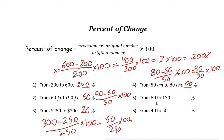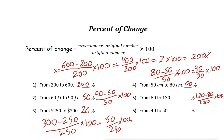Next one: 80 to 120. The original number is 80, so 120 minus 80 over 80 times 100. 120 minus 80 is 40. 40 divided by 80 is one half, times 100 — it is 50 percent.